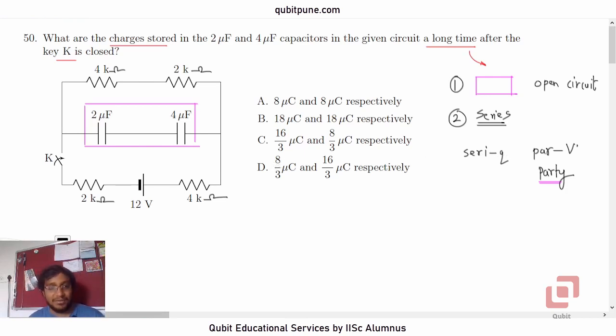Now what is the significance of that? We can directly rule out options C and D because of that. If the charges are same on capacitors connected in series, C and D cannot be right because here the charges are different: 16 by 3, 8 by 3, 16 by 3, 8 by 3. So it is either A or B. Had B or A, one of them being different and equal, then we would have directly got the answer without solving the problem. But here we have to solve it.